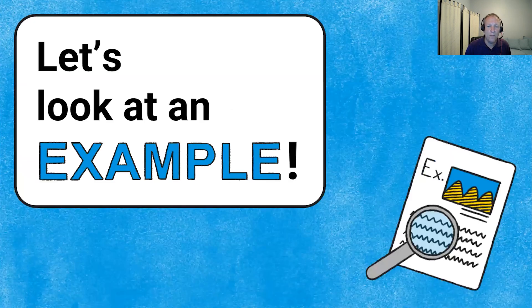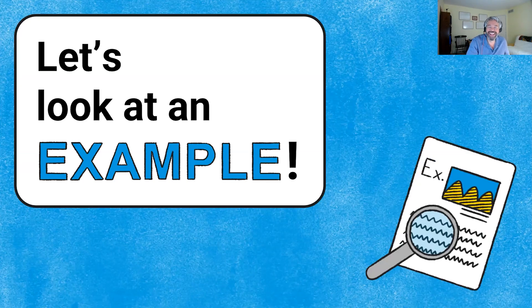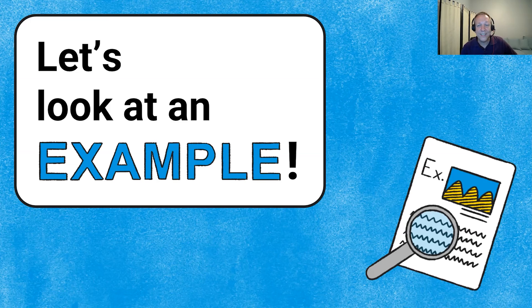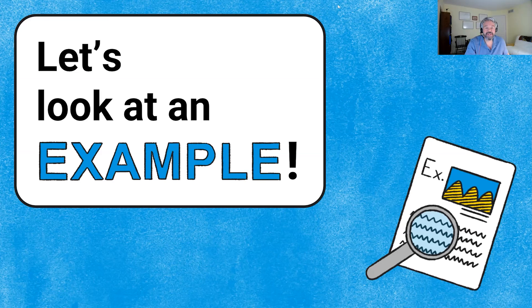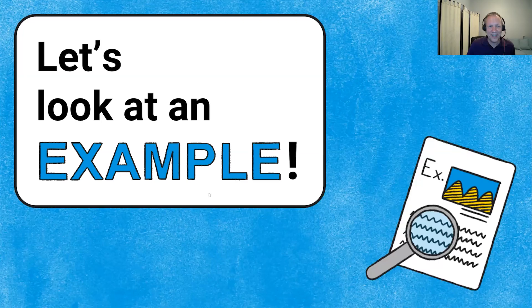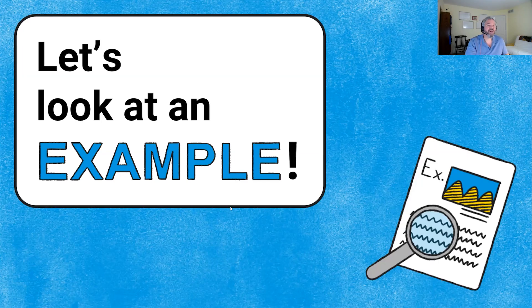Now let's look at the 2017 AP CS A Free Response Question 1, the Digits question. This question involves identifying and processing the digits of a non-negative integer — similar to what we just reviewed. We're given a Digits class with a private ArrayList of Integer objects called digitList. We need to write the constructor and one method. The constructor takes an integer num and is implemented in Part A. Part B implements isStrictlyIncreasing, a boolean method returning true if the digits are in strictly increasing order.